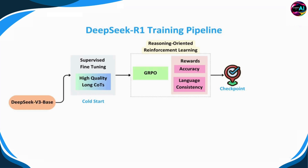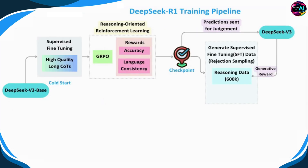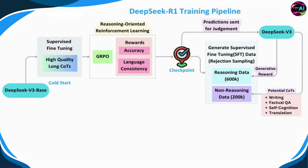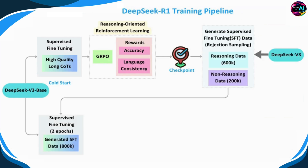Once the RL training converges, a checkpoint is created. From this checkpoint, the supervised fine-tuning data for the next step is generated. Some predictions are sent to DeepSeek V3 for judgment and to obtain a generative reward based on the accuracy of the predictions. This process helps refine the reasoning data, where poor outputs such as language mixing or long paragraphs are filtered out — only correct and high-quality responses are kept. This is called rejection sampling. In total, around 600k reasoning-related training samples are collected. For non-reasoning tasks like writing, factual Q&A, self-cognition, and translation, they reuse parts of DeepSeek V3's SFT dataset and collect approximately 200k non-reasoning samples, resulting in 800k carefully selected high-quality samples.